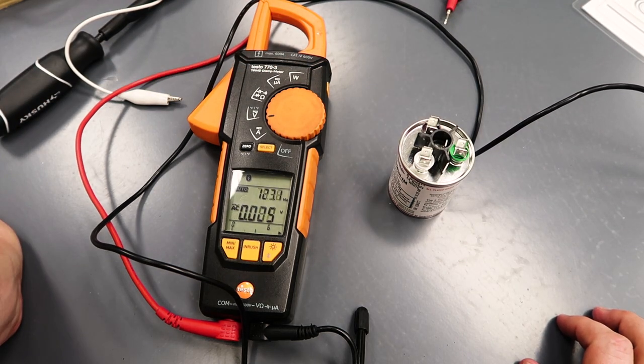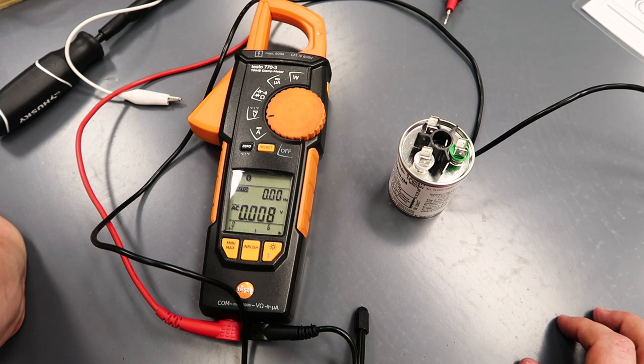The problem with the meter isn't that it doesn't tell you whether or not it's charged or not. It just, it's not really effective at discharging it in a timely fashion.